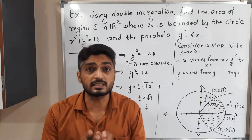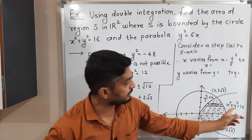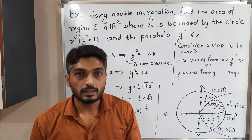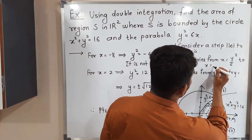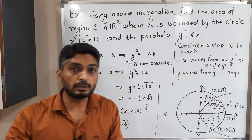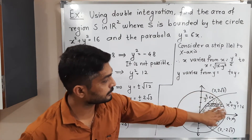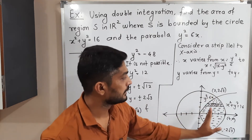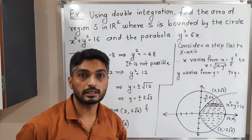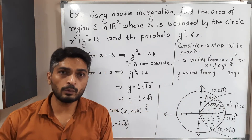The strip is bounded above by part of the circle x² + y² = 16. We need x expressed as a function, so x² = 16 - y², giving x = √(16 - y²). We take the positive root because we are on the right-hand side of the y-axis where x is positive.